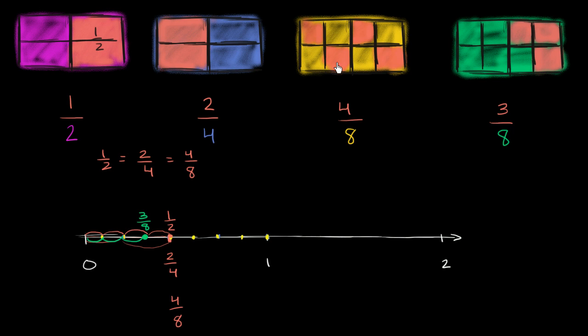Now what about 4 eighths? Here, I've split it up, where I have this one, this one, this one, and this one shaded in. But if you rearrange them, you could see that you could get exactly the same amount of the rectangle shaded in. And if you want to see that, divide each of these four into two. So divide those into two, and those into two.